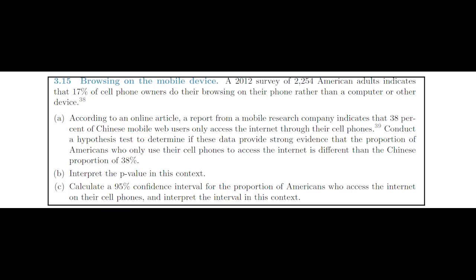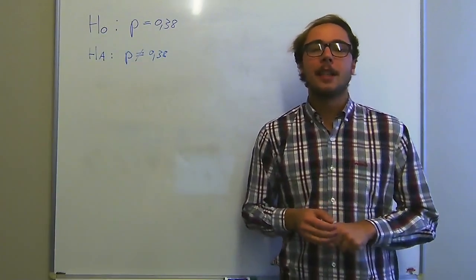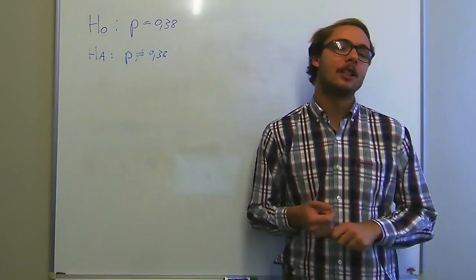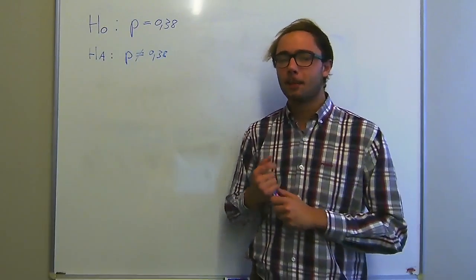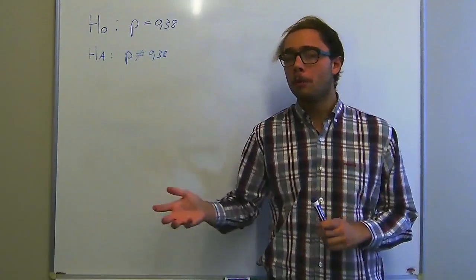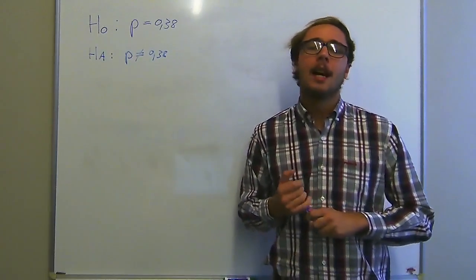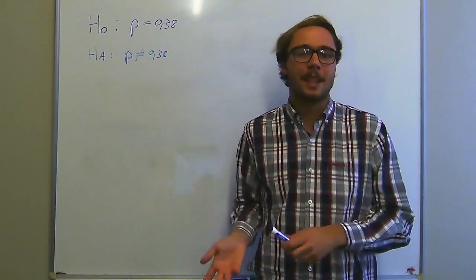Question B asks us to interpret the P value in this context. Let's say that there was a 38% proportion of Americans that use their cell phones for internet browsing. Then we can say that the probability of observing less than 17% or more than 59% in a sample of 2,254 would in fact be 0.